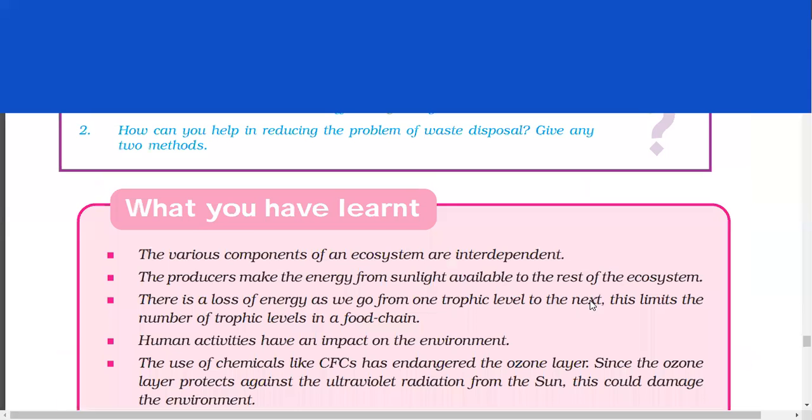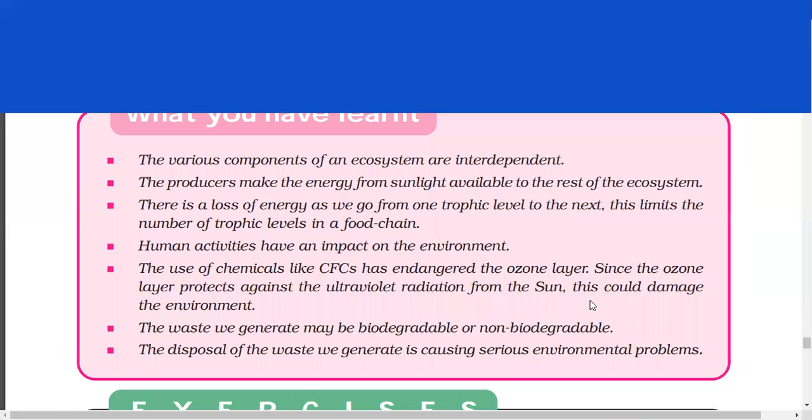What you have learnt. The various components of an ecosystem are interdependent. The producers make the energy from sunlight available to the rest of the ecosystem. There is a loss of energy as we go from one tropic level to the next. This limits the number of trophic levels in a food chain. Human activities have an impact on the environment. The use of chemicals like CFCs has endangered the ozone layer. Since the ozone layer protects against the ultraviolet radiations from the sun, this could damage the environment. The waste we generate may be biodegradable or non-biodegradable. The disposal of the waste we generate is causing serious environmental problems. Thank you all.